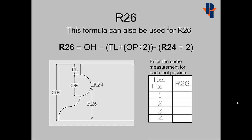On more complicated tools, such as an OG bull, a formula can be used to find R26. Take the overall height of the tool minus the top lip plus the opening divided by 2 and then subtract the R24 or search window value divided by 2. Enter the same measurement for each of the tool positions.